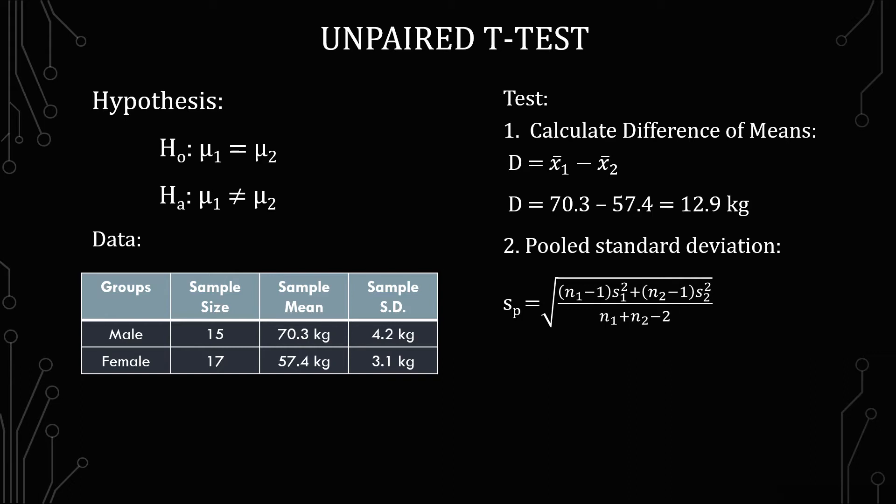So as you can see we have the square root of the first sample size minus 1 times the standard deviation squared plus the second group's sample size minus 1 times the standard deviation squared over the total sample size between both groups minus 2.